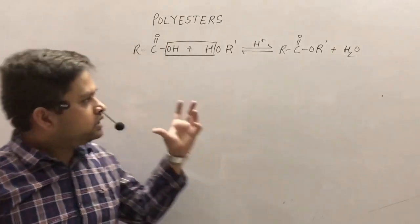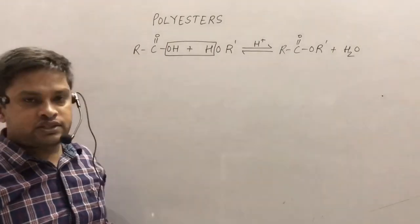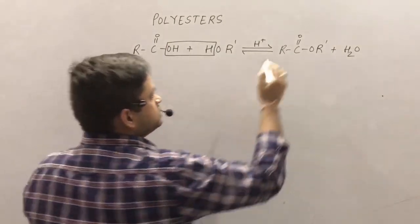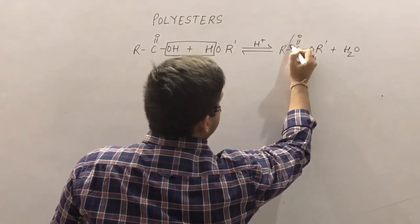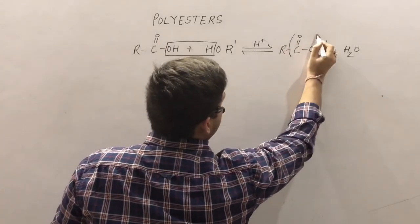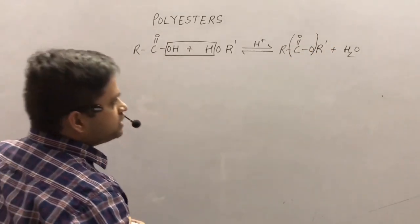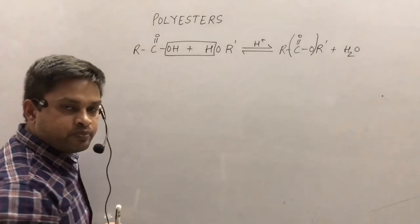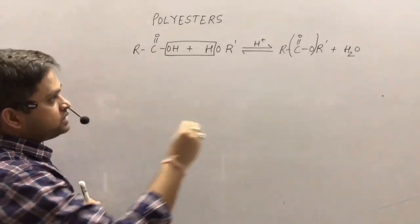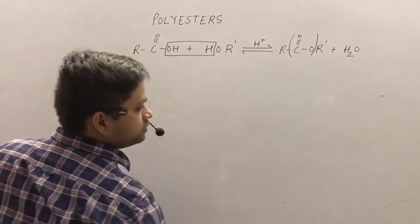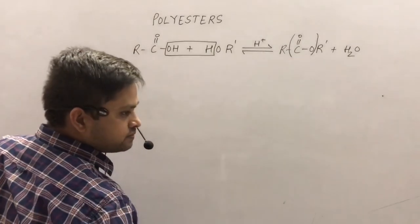It is a reversible reaction, and this group COO is basically an ester group, and this is the repeating unit in polyesters.